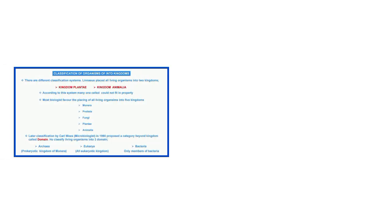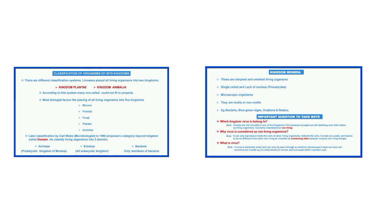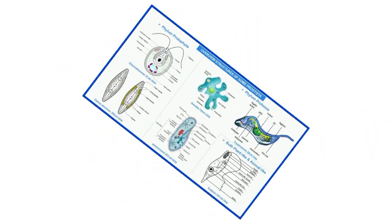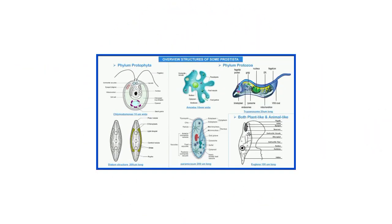In two of our previous videos, the first one talked about the classification of living organisms into kingdoms, and the second one recently covered Kingdom Monera — unicellular, simplest, microscopic organisms, mostly bacteria. In today's video we will talk about Kingdom Protista, so without further ado, let's continue.